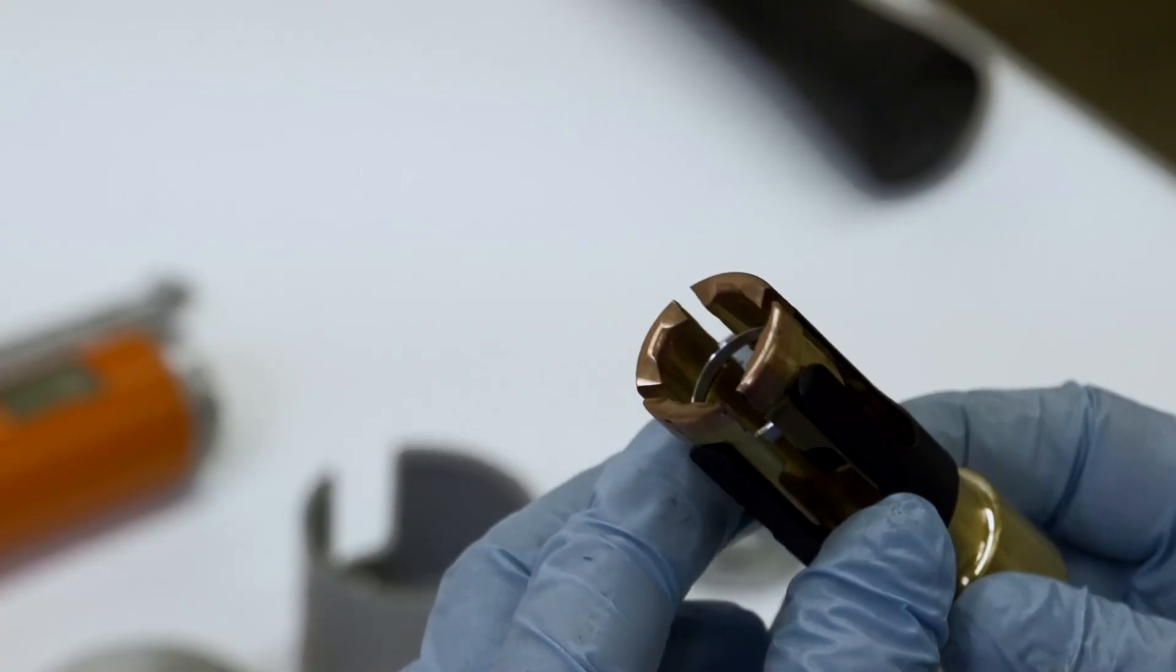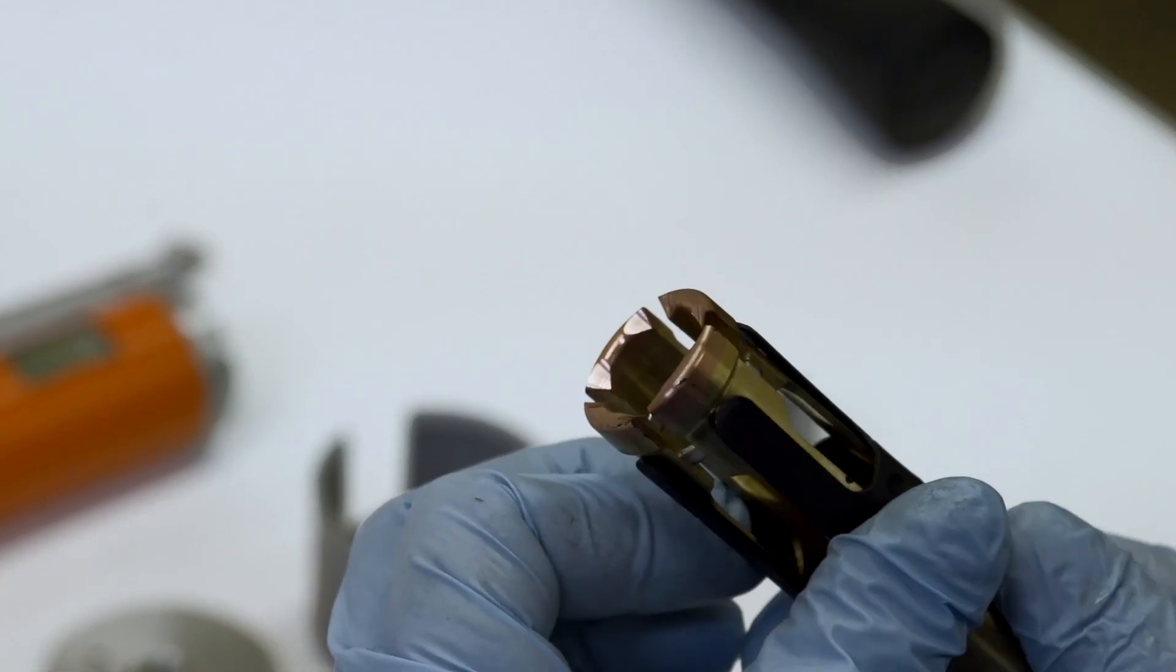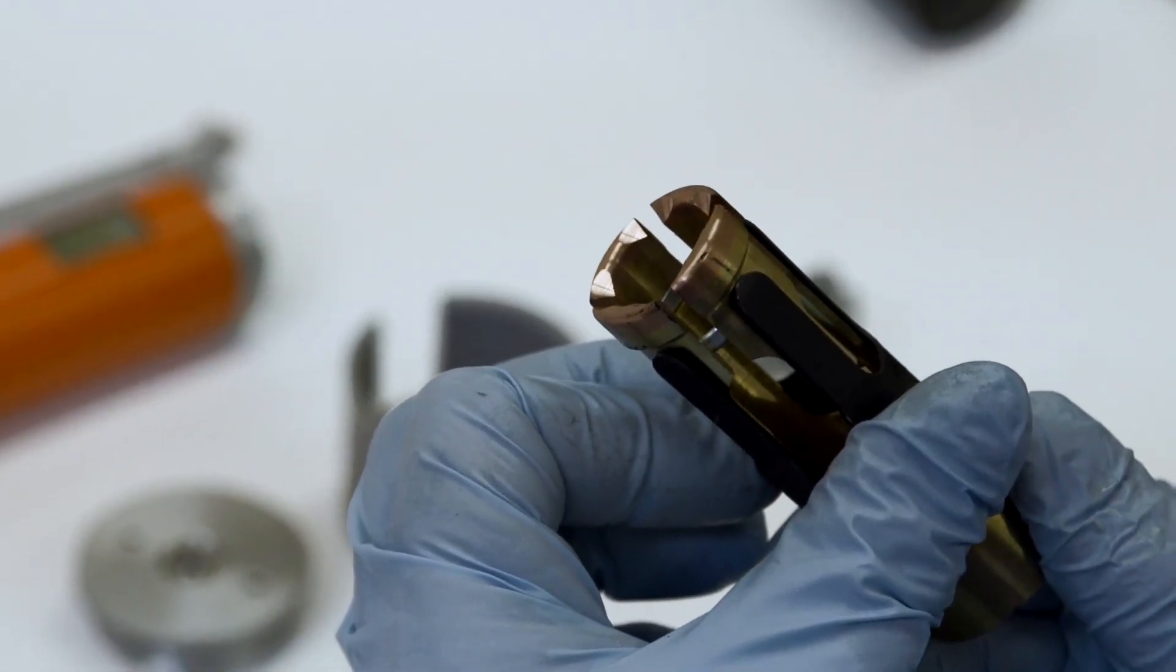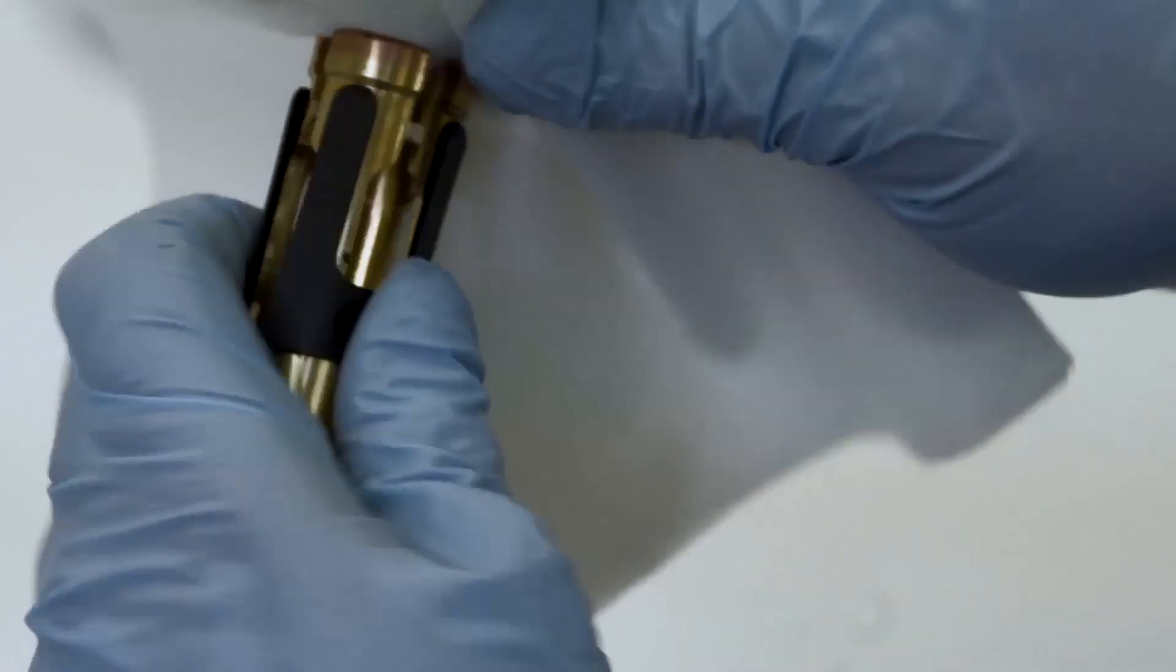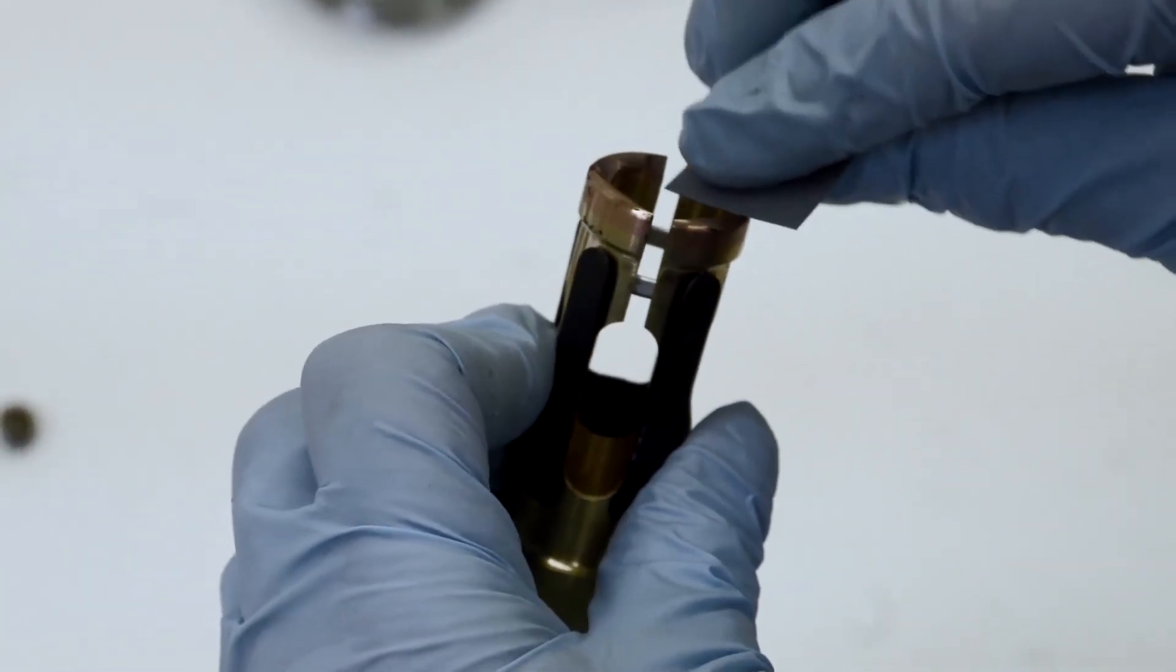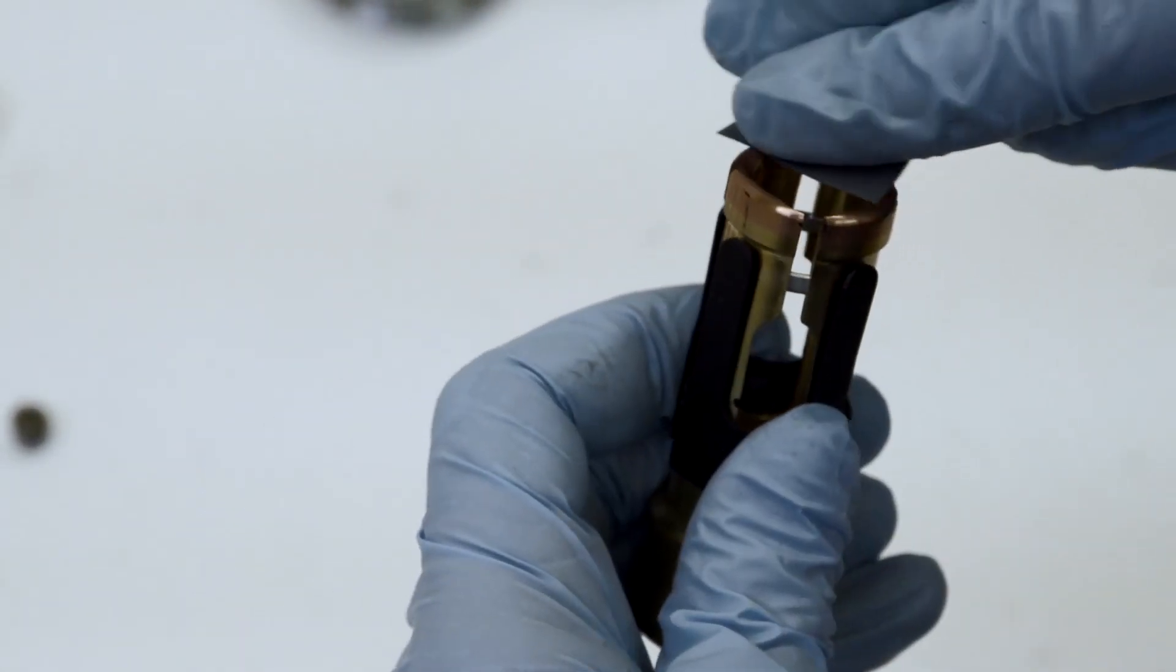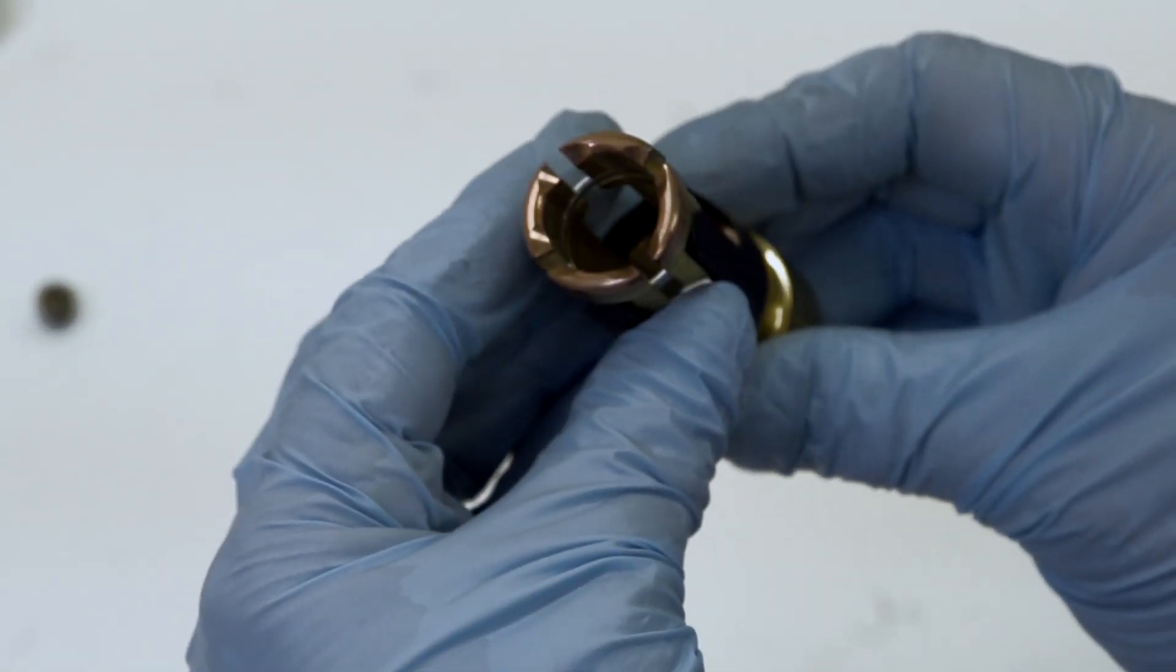Next we'll look at the stationary contact assembly. Remove any carbon deposits using water and a liquid abrasive type household cleanser. Thoroughly rinse and dry the assembly immediately after cleaning. Polish with an emery cloth if necessary, but avoid filing which could change the dimensions of the assembly.